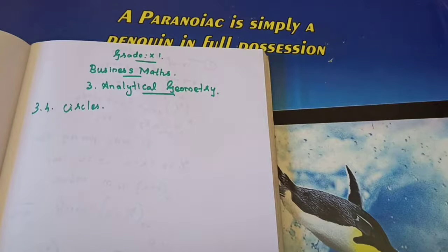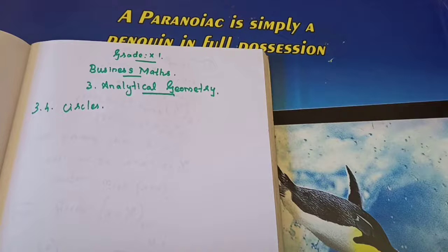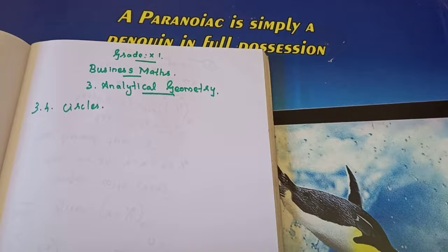Our section name is circles. First you need to know what a circle is. What do you mean by circle? A circle is a locus of a point which moves in such a way that the distance from a fixed set point is always constant.